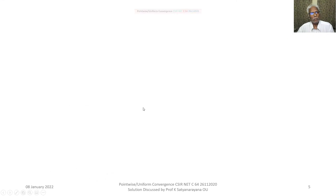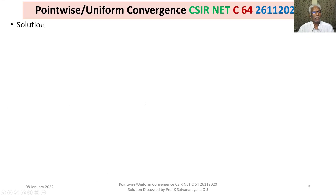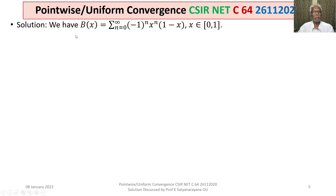Let us now discuss the solution. We first consider the second series, capital B(x), that is sigma n=0 to infinity of (−1)^n times x^n times (1−x), where x belongs to the closed and bounded interval [0, 1].